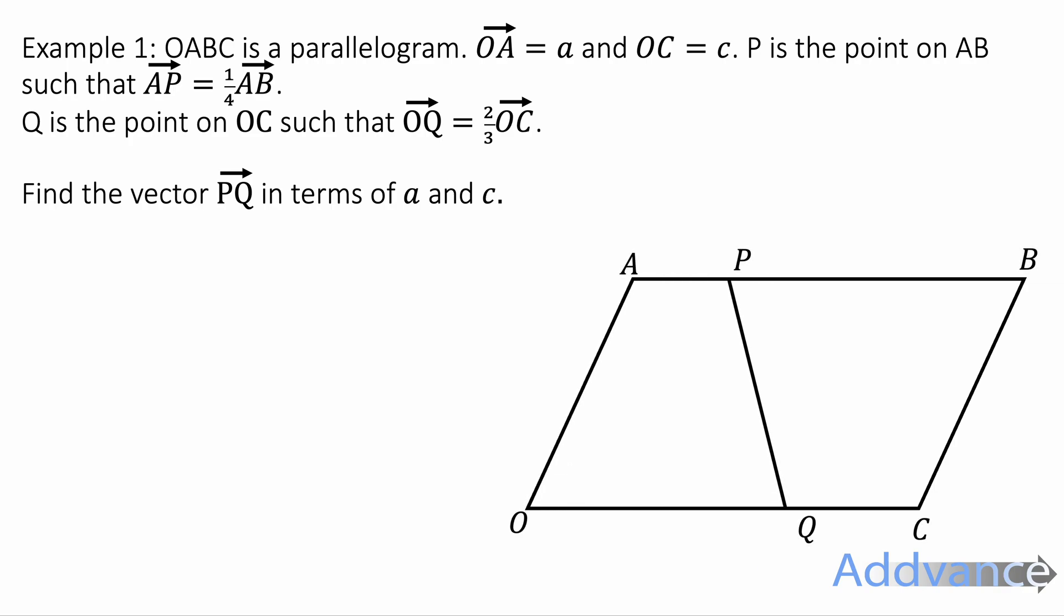It says OABC is a parallelogram. OA is vector a and OC is c. P is the point on AB such that AP is a quarter of AB. Q is the point on OC such that OQ is two thirds of OC. Find the vector PQ in terms of a and c. Okay, there's a lot of information there but it is also drawn in the diagram here and you are given this diagram in the question.